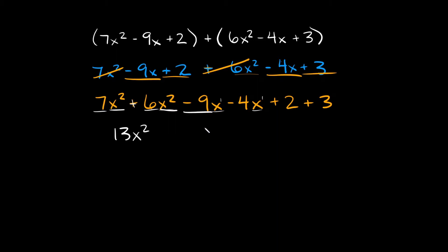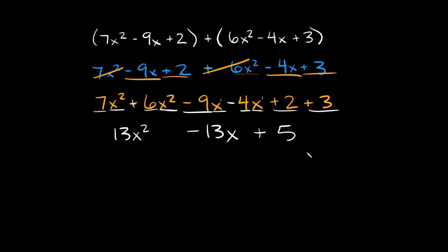Now for the next set: we have negative 9 minus 4. What's negative 9 minus 4? That's negative 13, and since we have an x here and an x here, you just keep the x. And then lastly we have positive 2 plus 3, which equals positive 5. So now we're left with 13x squared minus 13x plus 5.